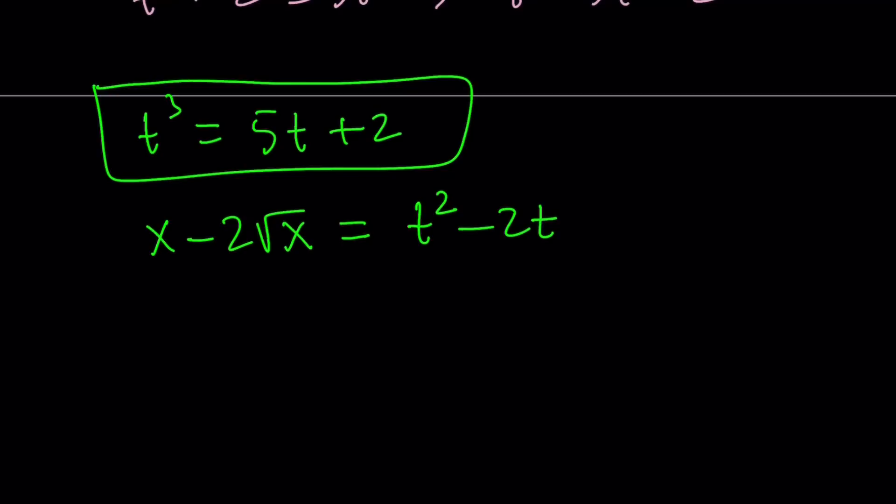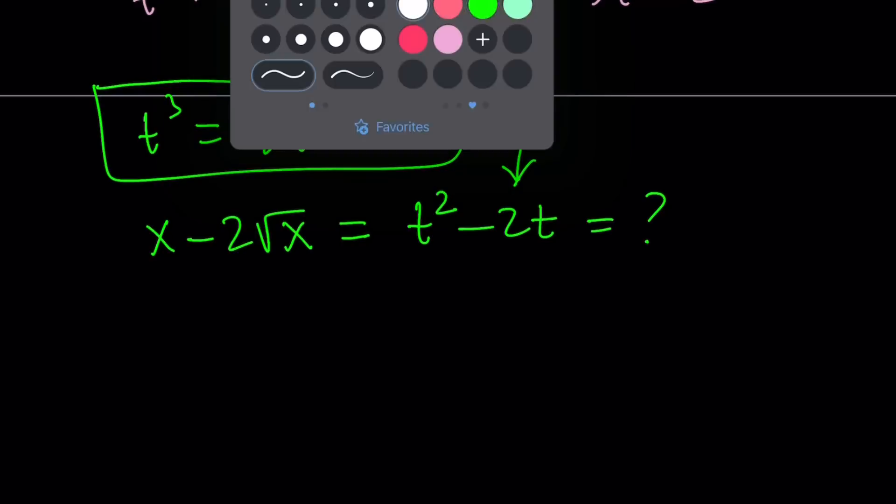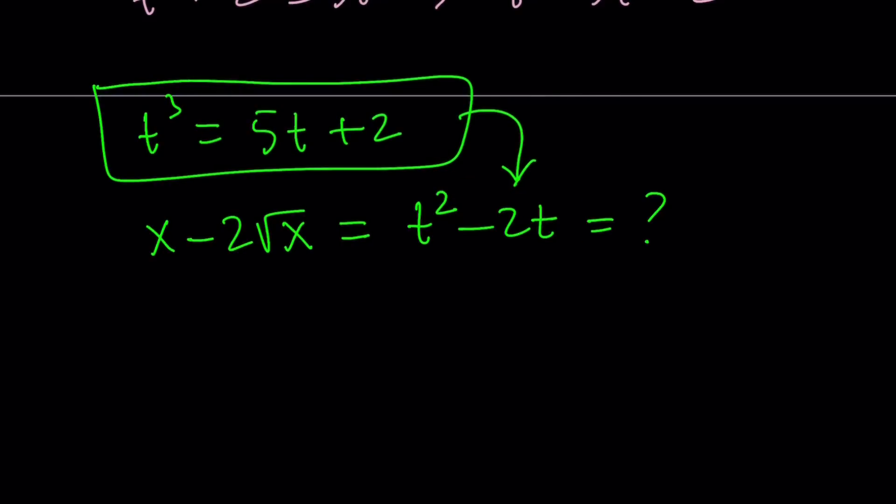t squared minus 2t. That's what I'm trying to find. I have this and I need to find that. Can we do it? Absolutely. Very easy using polynomials. But it's kind of backwards because if I gave you t squared in terms of t and ask for t cubed, that would be easy. This time, we're going to go backwards, which I think makes it more fun. So we're going to reverse engineer this polynomial.